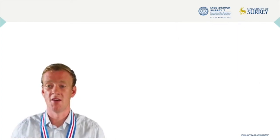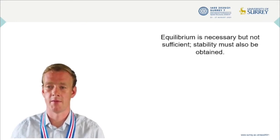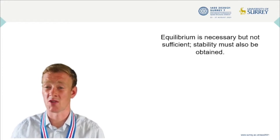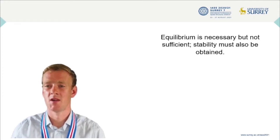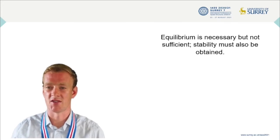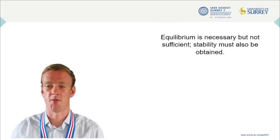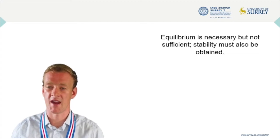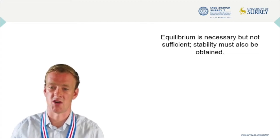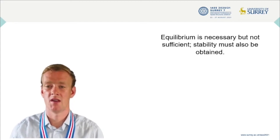Previously, Graphic Statics has only been concerned with equilibrium — it investigates whether the force polygon at a given node closes. Whilst equilibrium is necessary, it is not sufficient; the structure must also be stable. This research aims to integrate stability considerations into the existing methodology of Graphic Statics, making it possible to design the stability and stiffness of a structure as well as the forces within it.